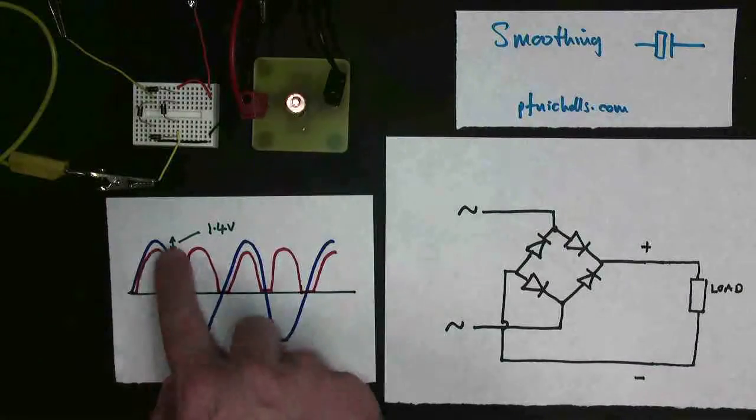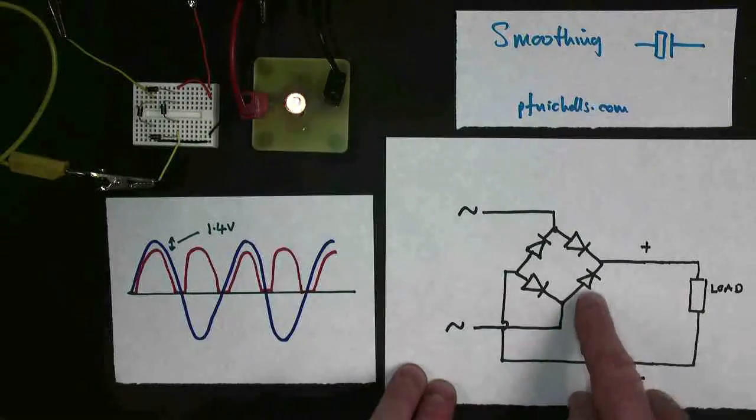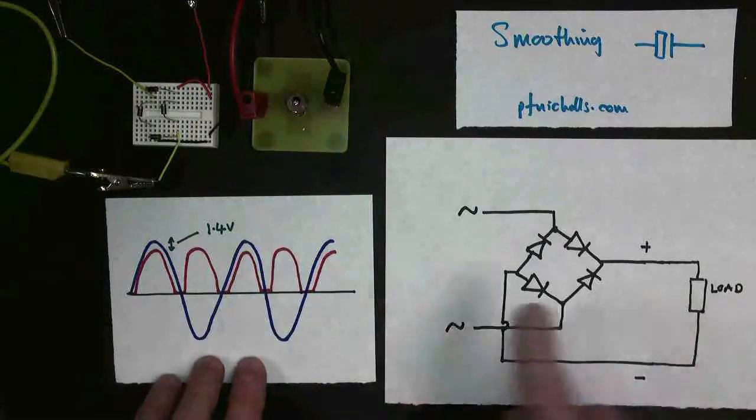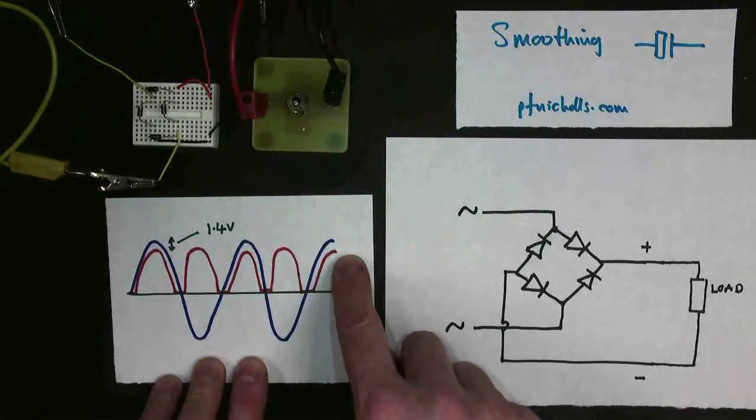So, so far we have our AC, which is our blue line. We have our full wave bridge rectifier made out of four diodes. And my load here is represented by my light bulb. And what we end up with is our red line, rectified AC. It's DC because it's all positive. But it's still not very smooth.